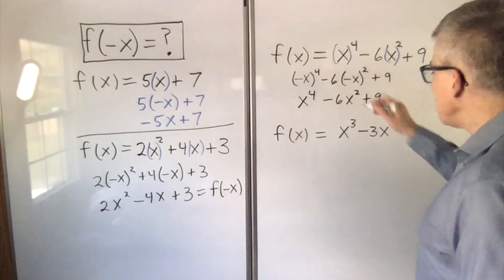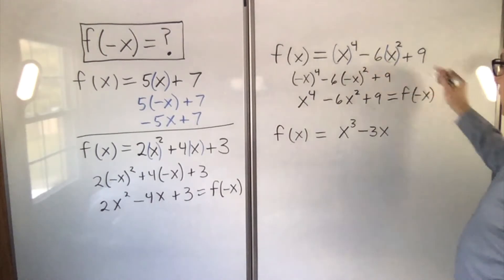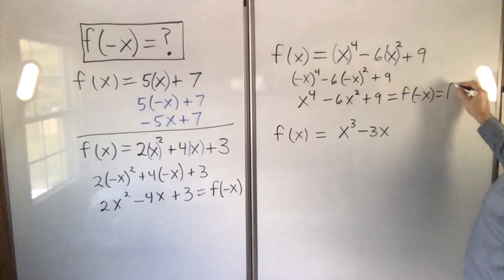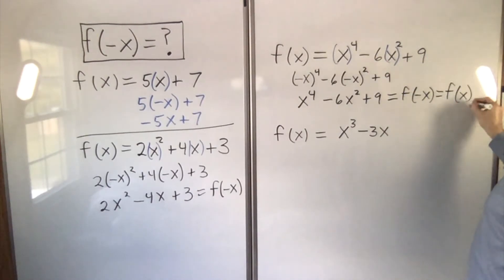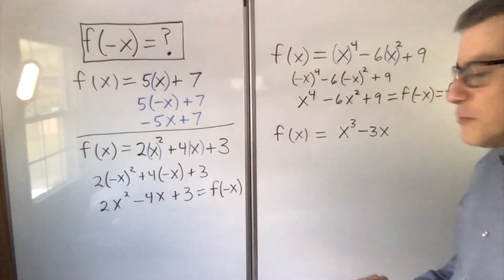So in this example, f of negative x equals f of x. That's not true for all functions. That's called an even function.